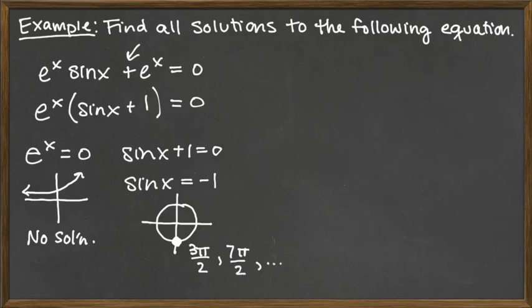If we were to subtract 2 pi instead, we'd be looking at the negative pi over 2. And again, we could keep going in that direction.